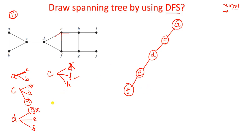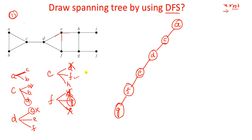The next vertex is F. F has connections with D, G, and E. D is already visited and E is already visited, so the only remaining element is G. Now write down the incident vertices for G. G has F, H, and J. F is already visited. H and J are not visited. I can take J.